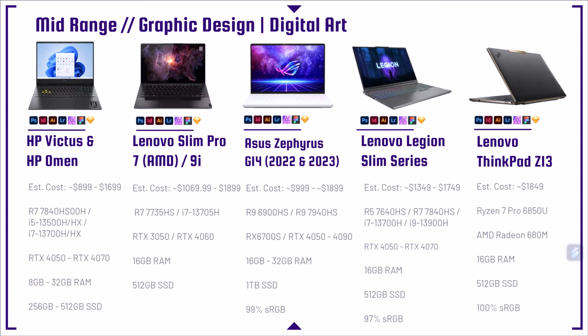HP Victus and HP Omen are great budget-friendly options, especially the Victus. And then the Lenovo Legion Slim Pro 7 and Slim Pro 9i are two great laptops. The 9i is the new kit on the block bringing a lot more performance. I reviewed the Slim Pro 7 this year — it was good, but not overly impressive over last year's model. The Slim Pro 9i with the i7-13705H and RTX 4060 is a really, really good model.